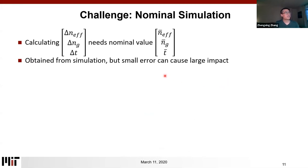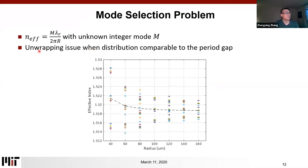Another issue is that when trying to calculate these deviations, we need to compare the result from the measurement to the nominal value coming from simulations. This difference means that a small error in our simulations of the nominal value will also cause a large impact on the deviation. A third issue is that when calculating the effective index, there is an unknown integer — the mode number — and the way we solve for this integer is to compare the effective index calculated by different integers to the nominal values from simulations, and pick the one nearest to our nominal value.